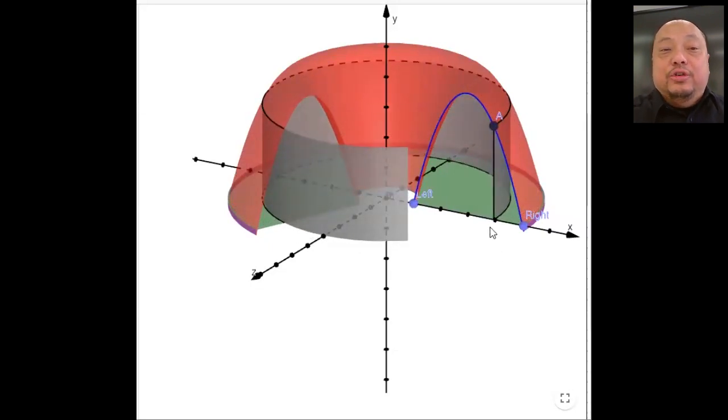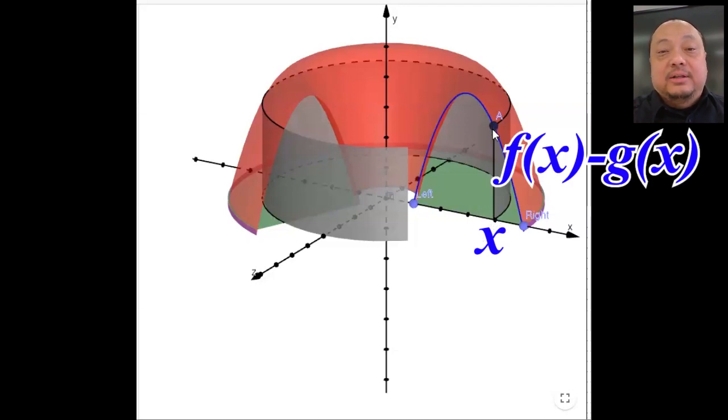Let's take one typical shell. It's at this position x. The height of the shell is this height, the difference between f(x) and g(x). The length of the shell is the circumference. The thickness of the shell is a tiny dx. If you flatten out that shell you get a rectangular box with a height of f(x) minus g(x), length of circumference and thickness of dx.